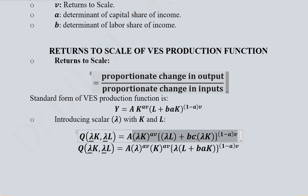Writing the standard form of the VES production function as Y = AK^(av)(L + baK)^(1-a)v and introducing lambda, we get this form. Wherever there was L and K, now we have lambda with it because we are introducing lambda with both variables. The simplification process shows that lambda is separated with the term AK^(av), with capital also part of this overall term.